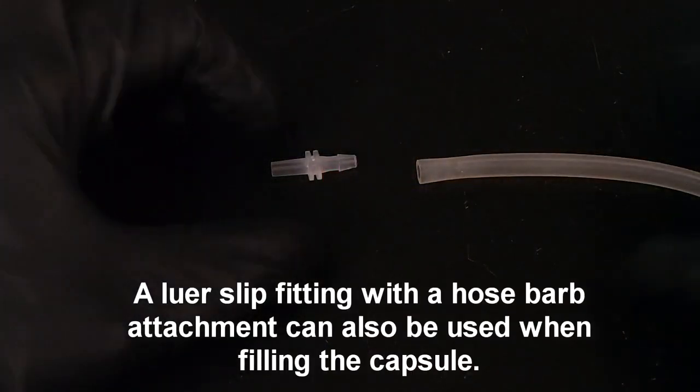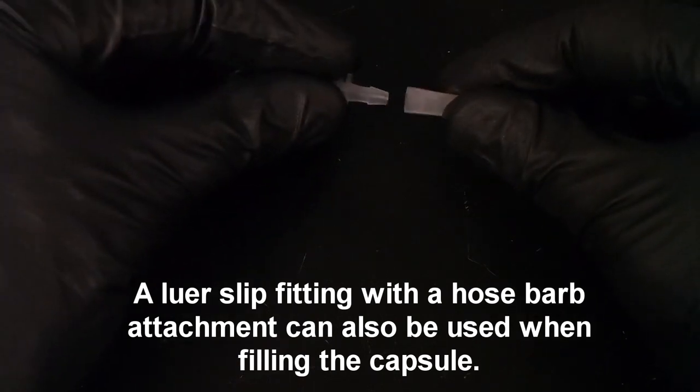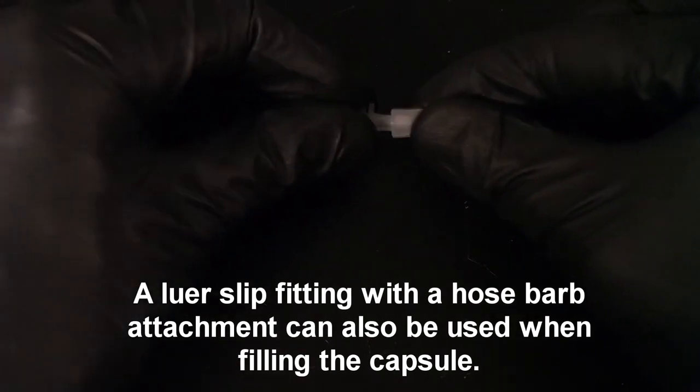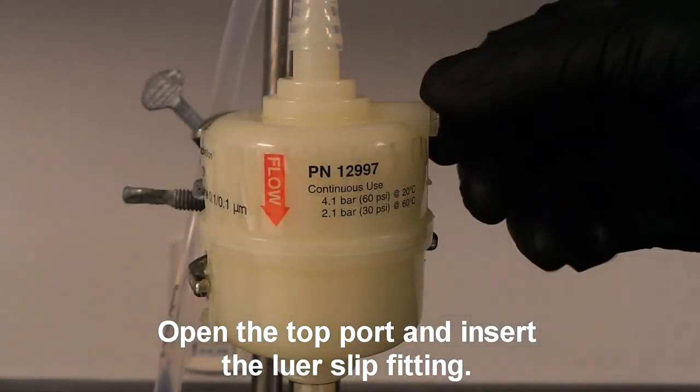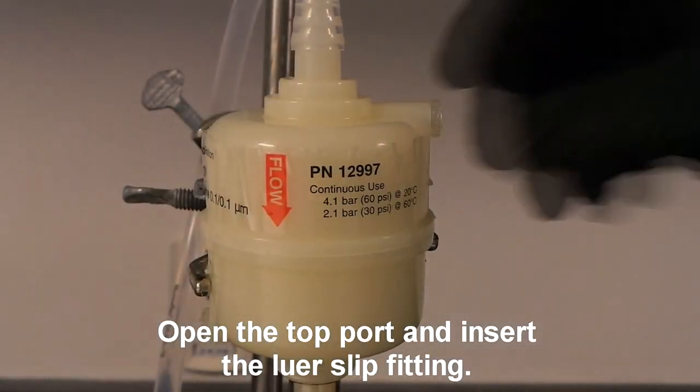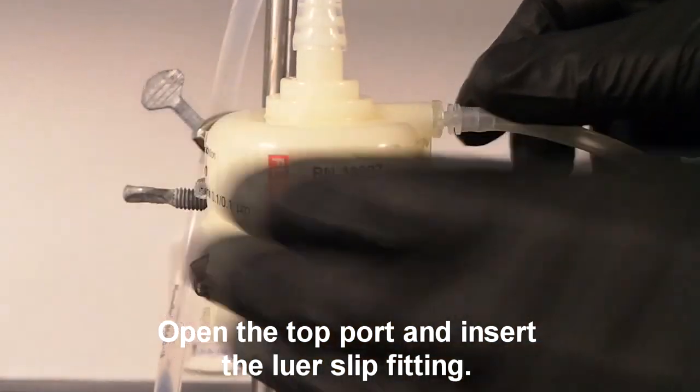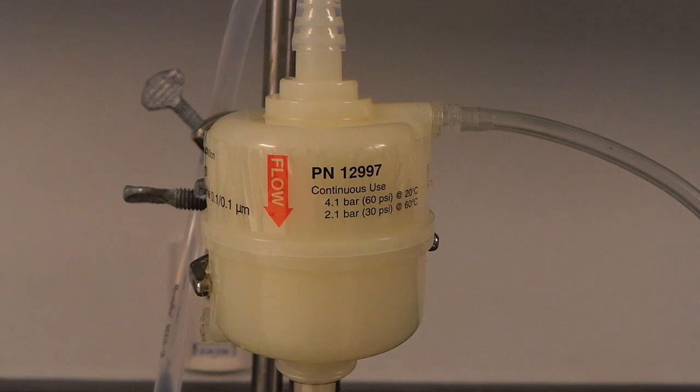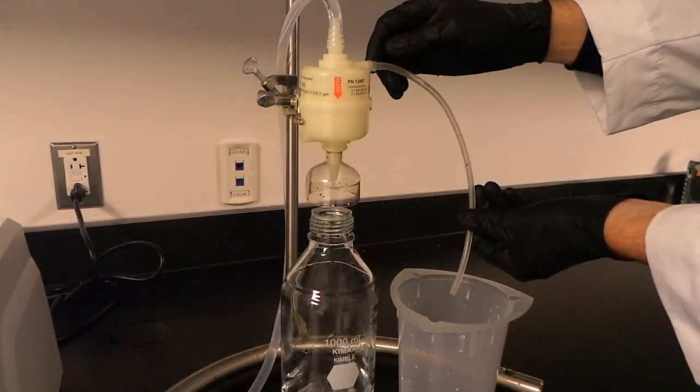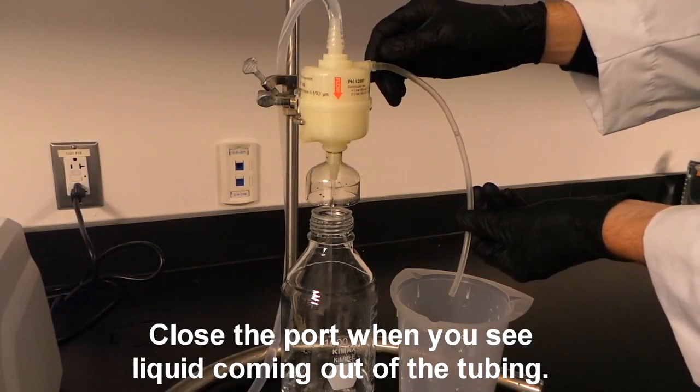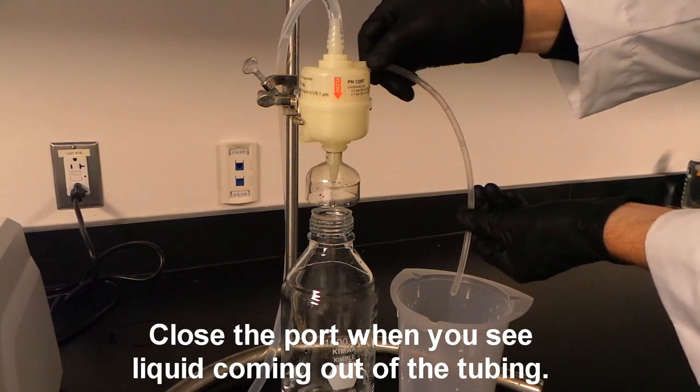A luer slip fitting with a hose barb attachment can also be used when filling the capsule. Open the top port and insert the luer slip fitting, and close the port when you see liquid coming out of the tubing.